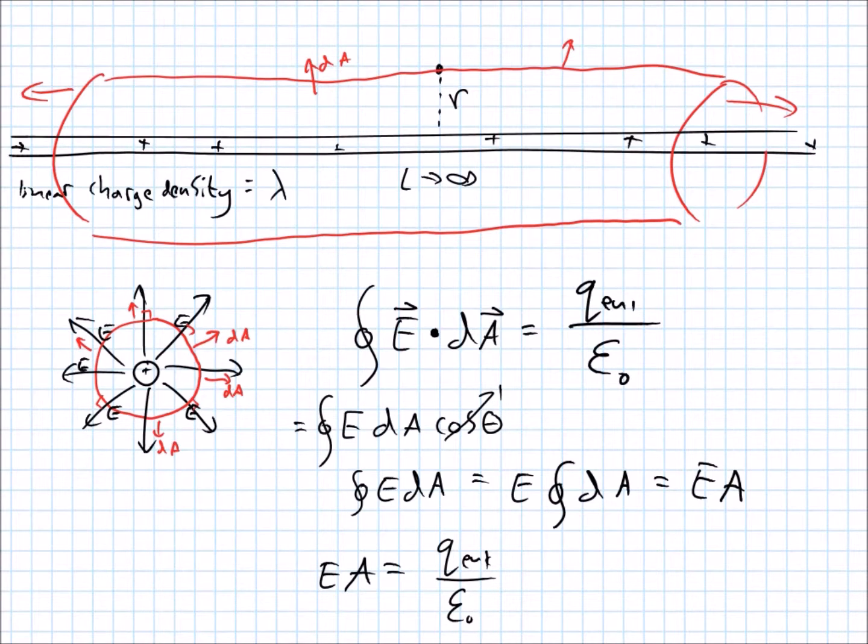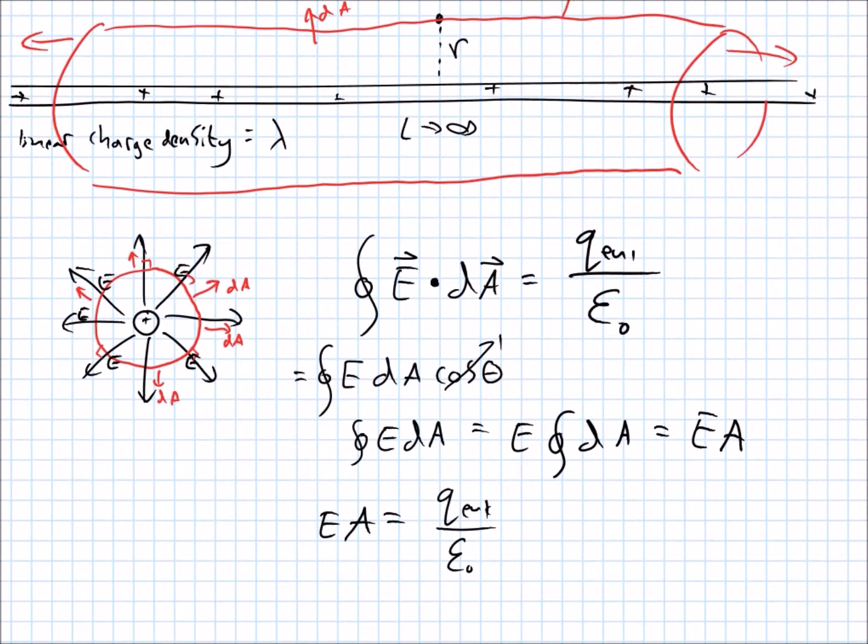Alright, where A is the area of your Gaussian surface. Okay, well, mine would be the surface area of a cylinder, minus the ends, because it's infinitely long. So that would be the electric field times, okay, so the circumference of a circle is 2 pi r.